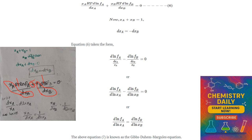By transferring the second term to the right-hand side, we get: d·ln(fA)/d·ln(XA) = d·ln(fB)/d·ln(XB). This is equation 7, and it is known as the Gibbs-Duhem-Margules equation. Thank you. In the next class, we will see another interesting topic on our channel.